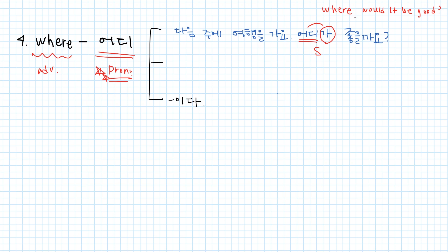Another example with location particle 에서. 우리 어디에서 만날까요? Where shall we meet? And with 이다? 너 지금 어디야? Where are you now? What you need to remember is where in English can stand alone in the sentence. But in Korean, 어디 can't stand alone as it's a pronoun. Therefore, particles or 이다 should be followed.